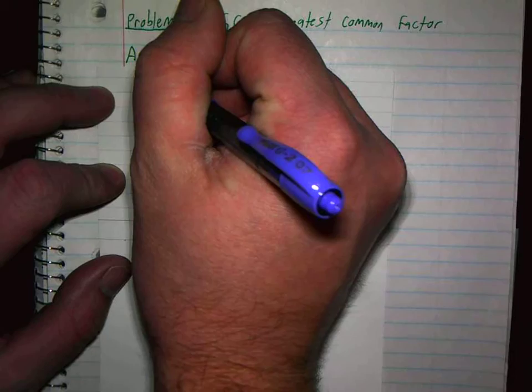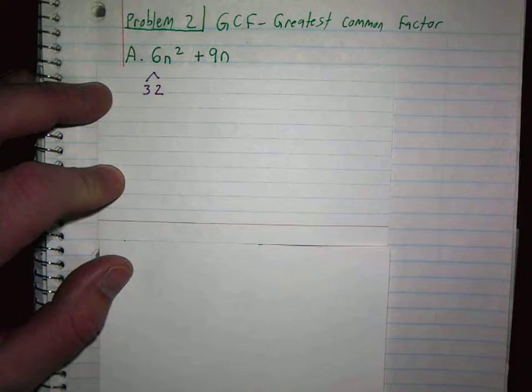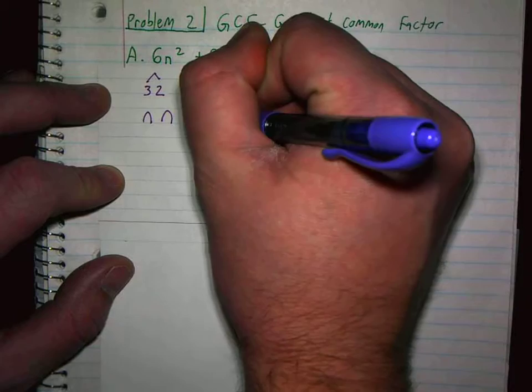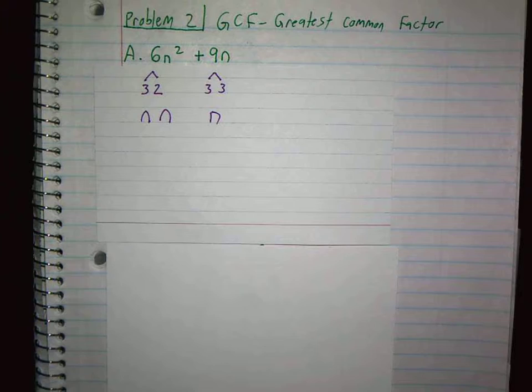So 6N squared, I could break 6 up into 3 and 2. And N squared, well what that means is 2 Ns. 9 breaks down into 3 and 3 with 1 N. And then what you could do is you could just look at both terms and you're trying to find what they have in common. But not only what they have in common, but what's the greatest thing they have in common.